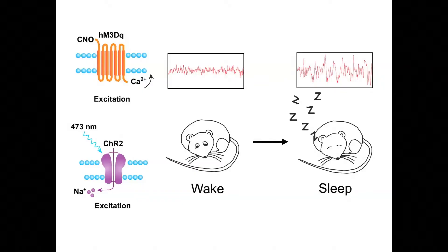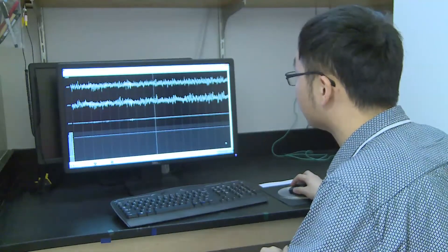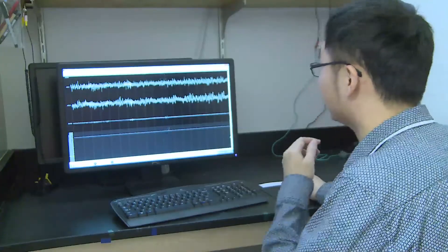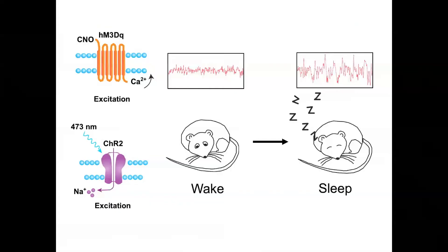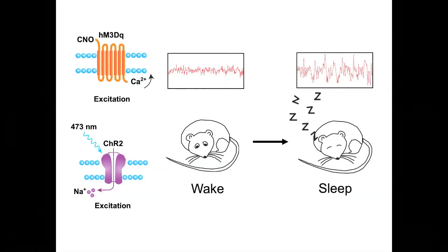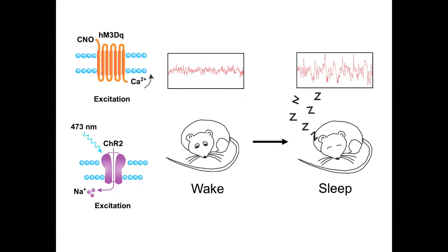To artificially activate AANs, by selectively expressing either an engineered receptor called hM3Dq or a light-gated cation channel, channelrhodopsin, we are able to activate AANs with the chemical ligand CNO that works on the hM3Dq receptors, or with a pulse of blue light. To monitor the effects of artificially activating AANs on brain state, we performed simultaneous EEG and EMG recordings. Remarkably, once we activate AANs, mice stop moving around and their brain state changes from wakefulness into a deep sleep characterized by strong slow-wave oscillation. Even a brief AAN activation can potentiate subsequent sleep.